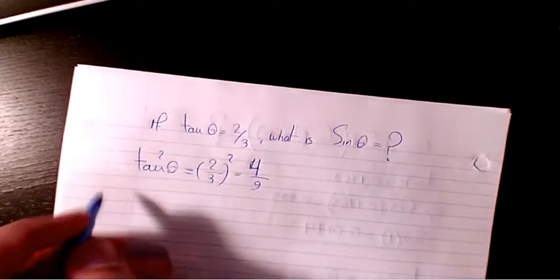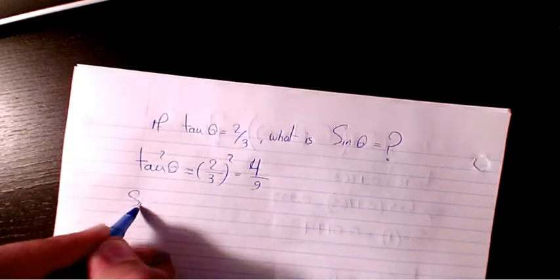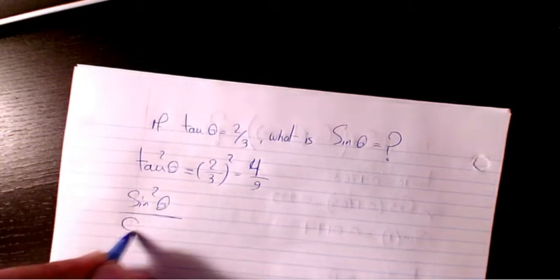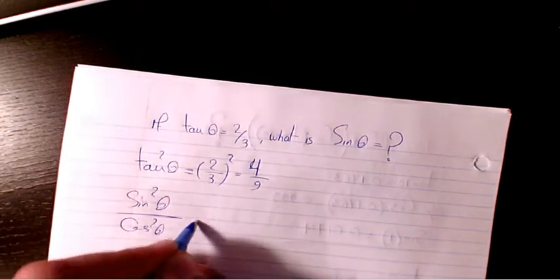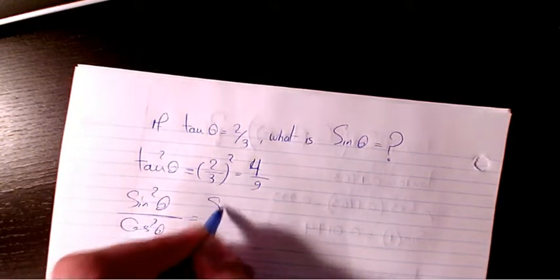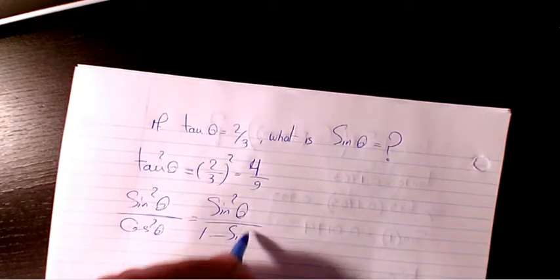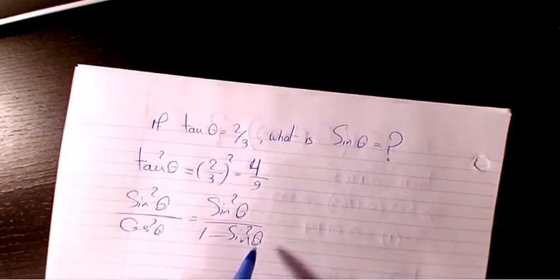Then I have sine squared divided by cosine squared, which is equal to tan squared. And I have sine squared divided by 1 minus sine squared, because cosine squared is 1 minus sine squared theta, so it will be equal to 4 over 9.